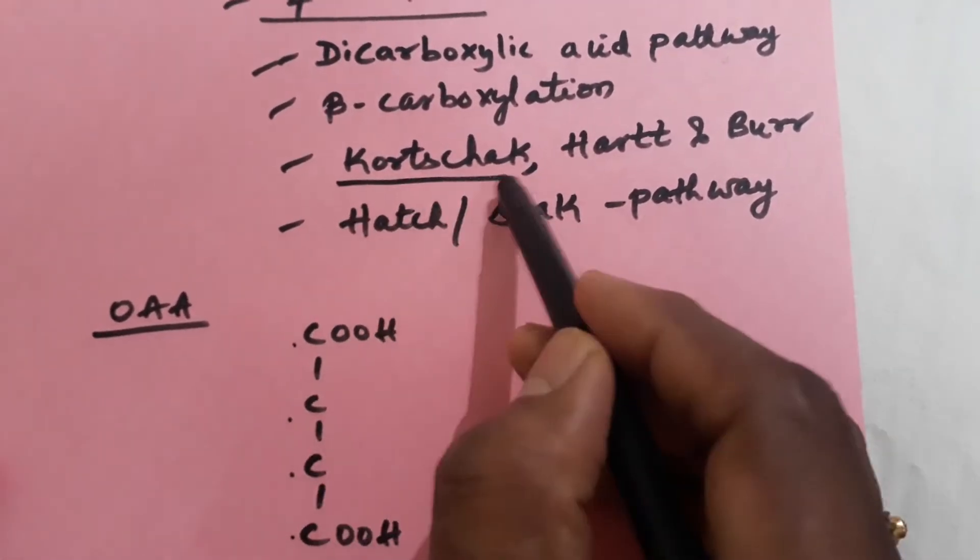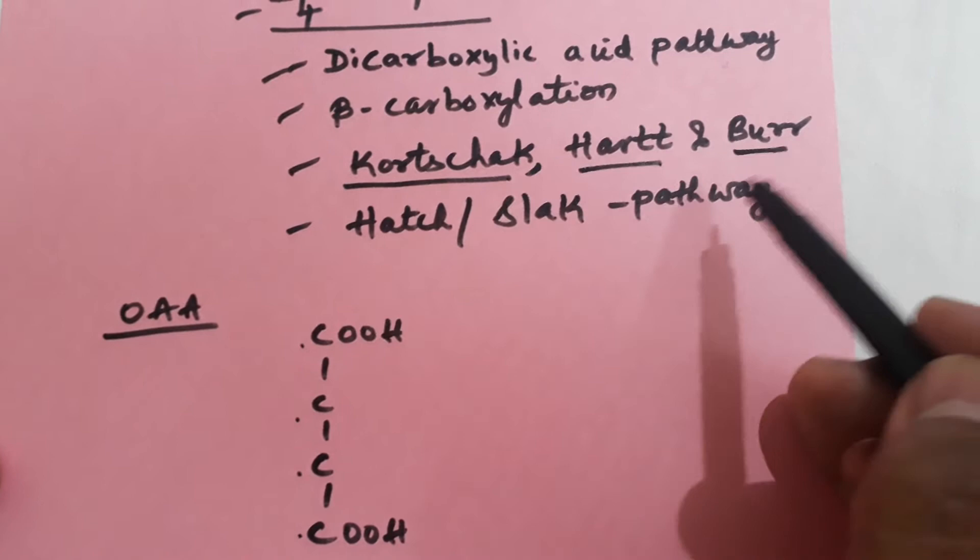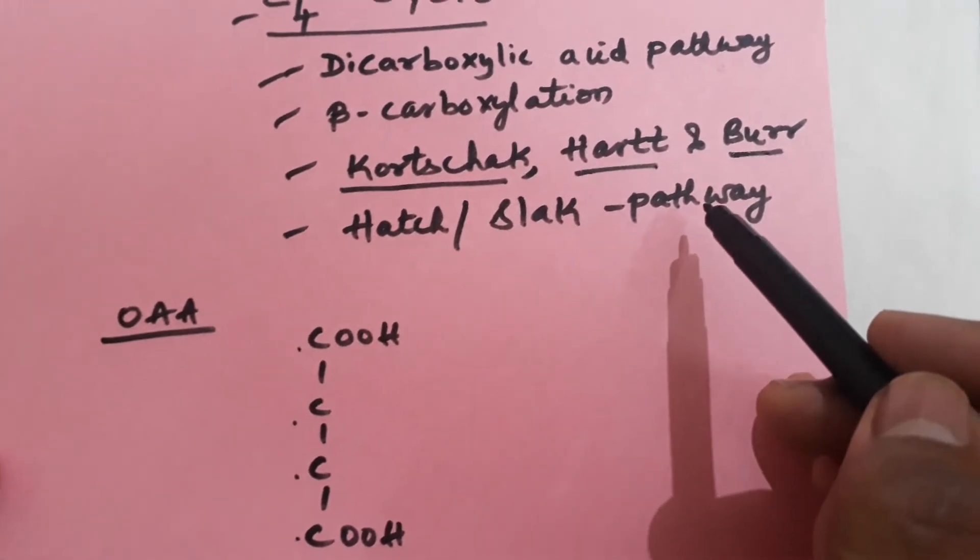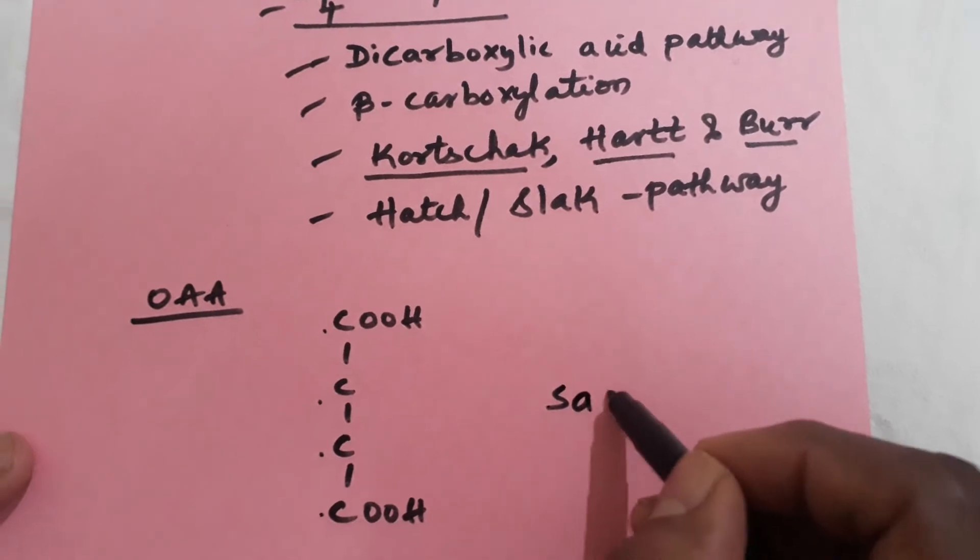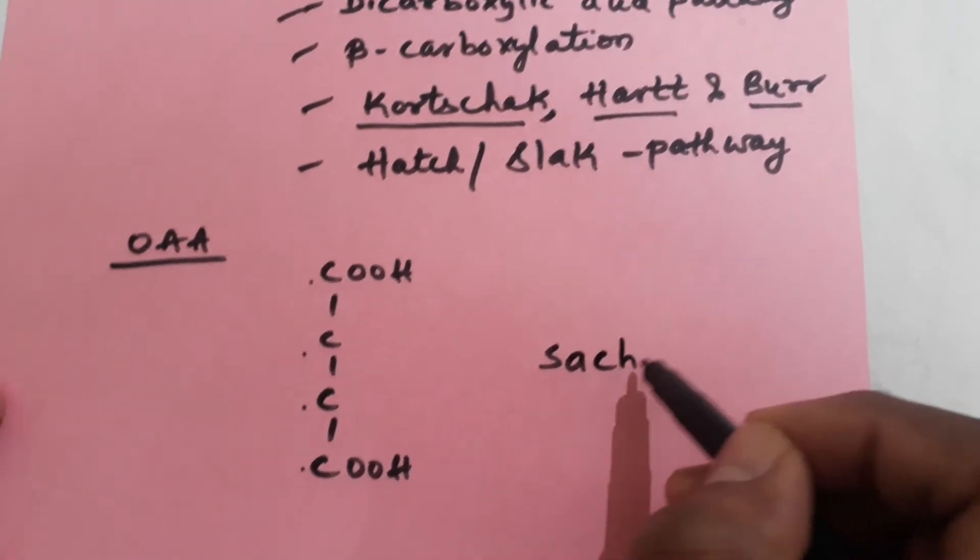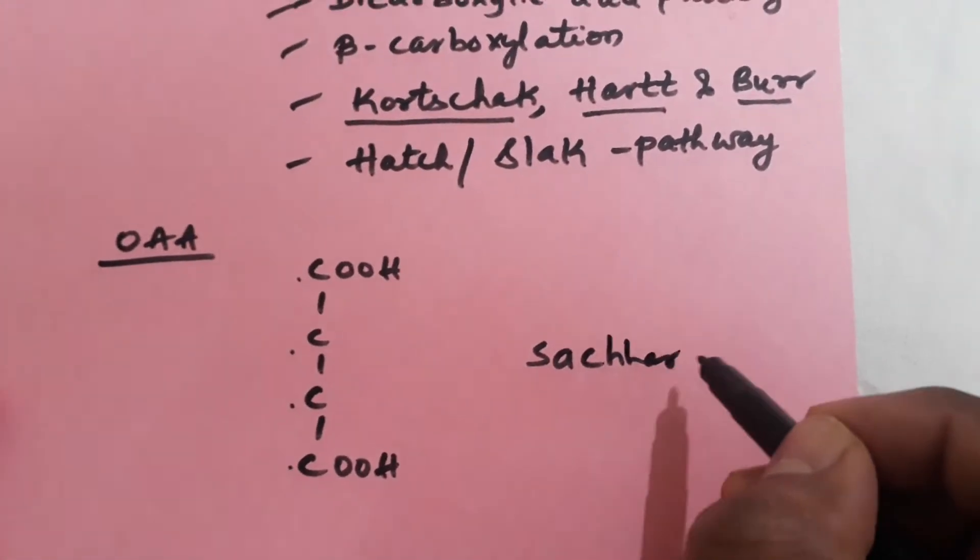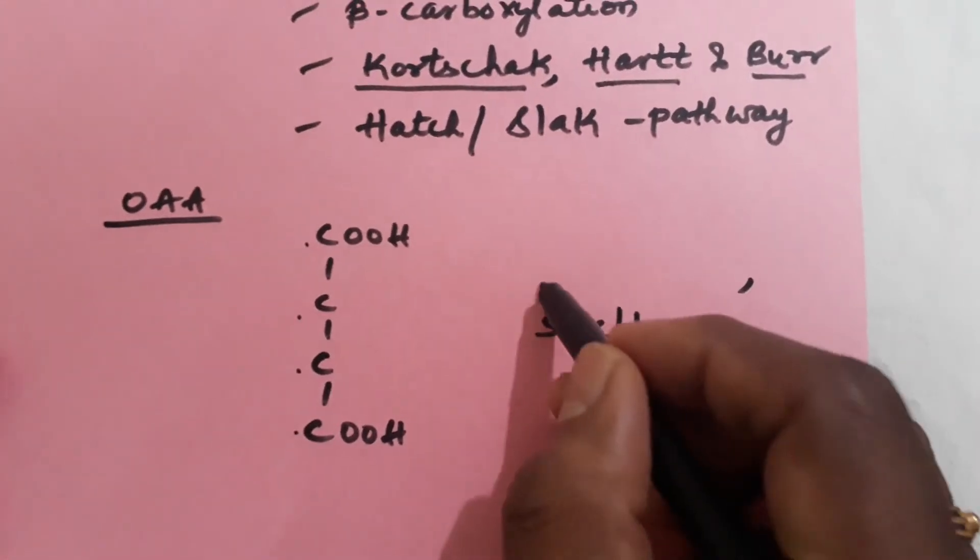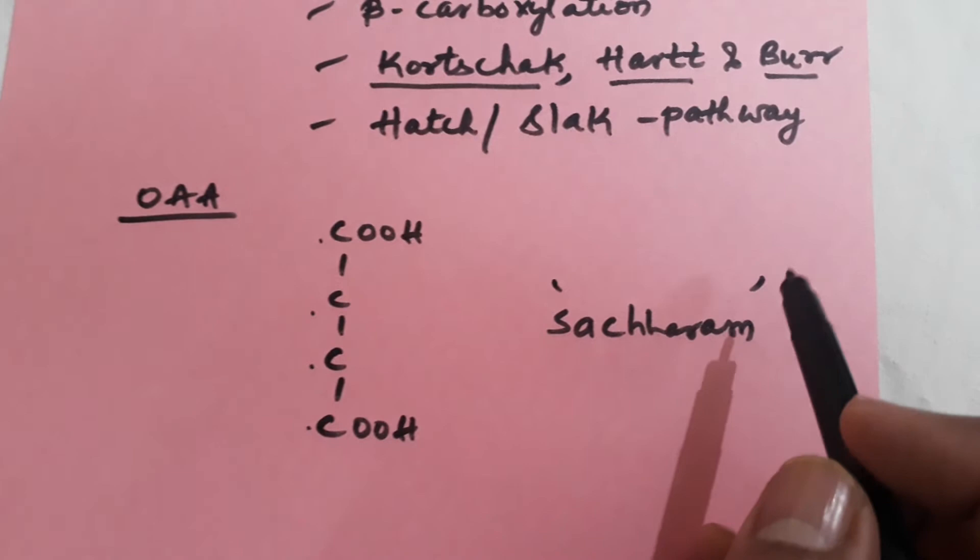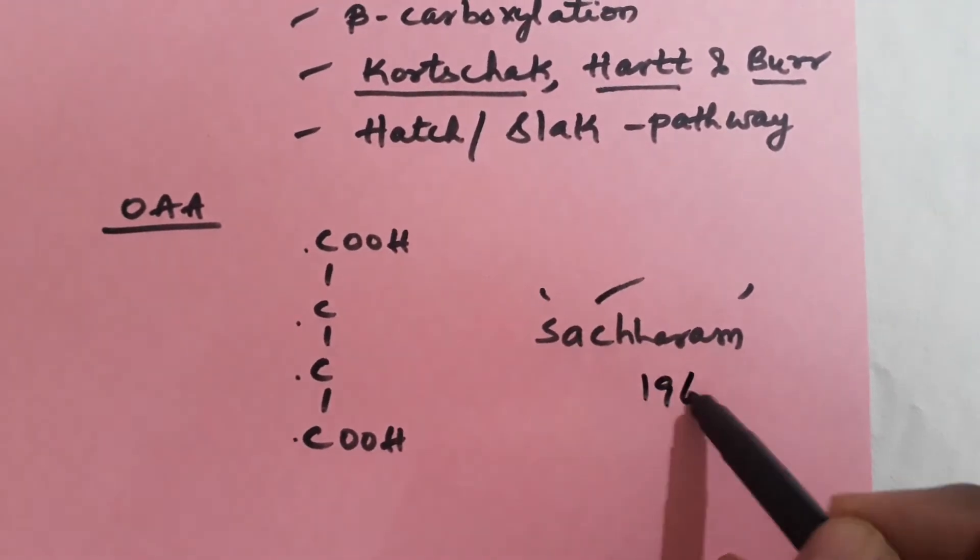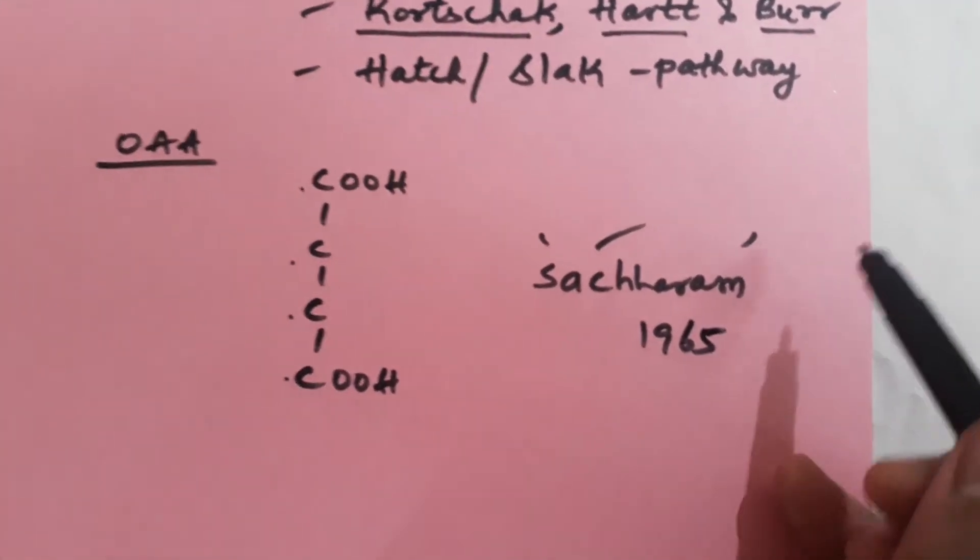Firstly, it was discovered by Coats Chalk, Heart, and Burr. Those 3 scientists discovered it in Saccharum plant, sugarcane. The C4 pathway was discovered first in sugarcane plant in 1965 by Coats Chalk, Heart, and Burr.